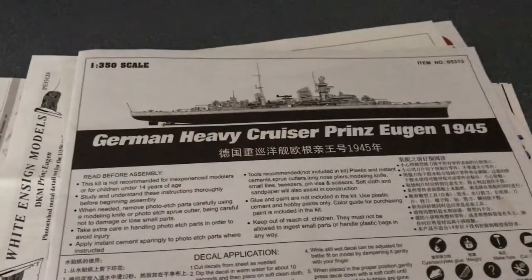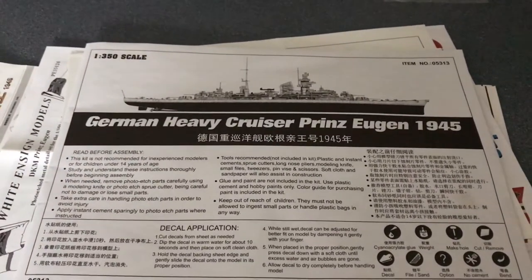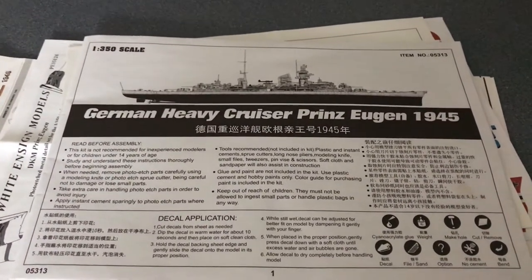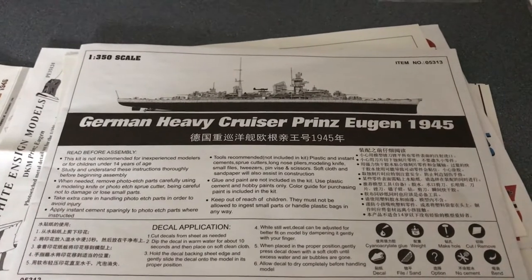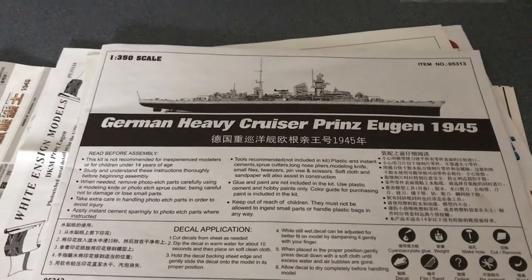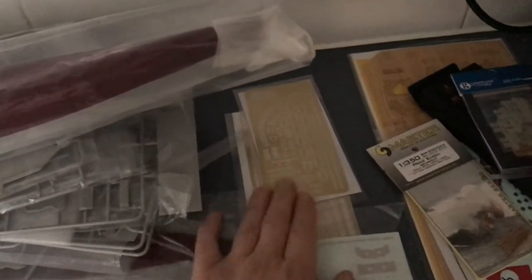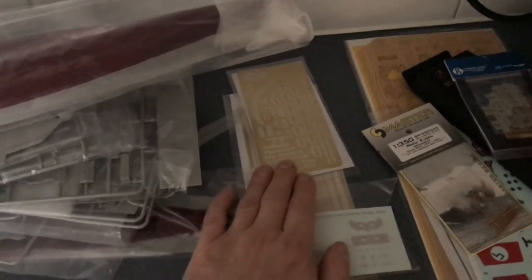I'm going to use this model, Trumpeter's heavy cruiser Prince Eugen in its 1945 configuration, as an example of how to pre-plan a model build. So we start off with a kit of parts that we bought and we might have spent 60 or 70 pounds on the base kit.